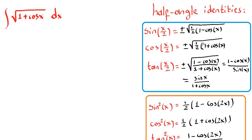Let's remember what the half-angle identities are before we start. Sine of x over 2 is equal to the square root of one half times 1 minus cosine of x. Similarly, cosine of x over 2 uses 1 plus cosine of x. Since tangent is sine over cosine, we can write the square root of (1 minus cosine x) over (1 plus cosine x), which simplifies to sine of x over (1 plus cosine x) using other trigonometric identities. So you can use any of these three forms for tangent of x over 2 as a half-angle identity.